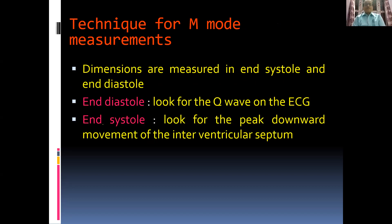For M-mode measurements, dimensions are measured in end-diastole and end-systole. To identify end-diastole, look for the Q-wave on the ECG; if you cannot find the Q-wave, look for the R-wave. For end-systole, look for the peak downward movement of the interventricular septum.